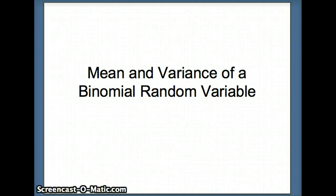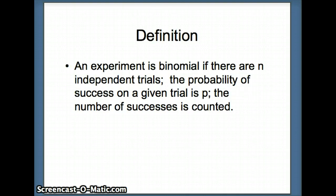This presentation examines the mean and variance of a binomial random variable. Recall, if an experiment is binomial, we have n independent trials. Probability is always the same for each trial, we call that p, probability of success. And we count the number of successes. And one more thing to add is the probability of failure, 1 minus p, or what we call q.